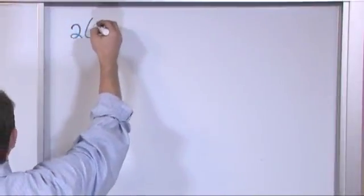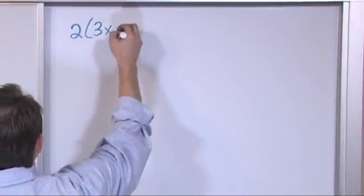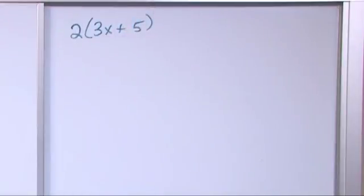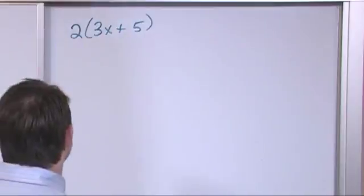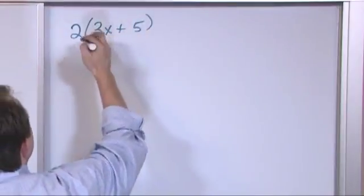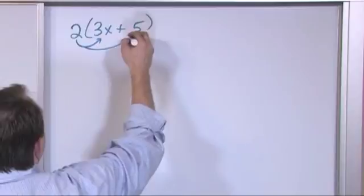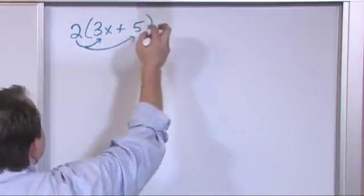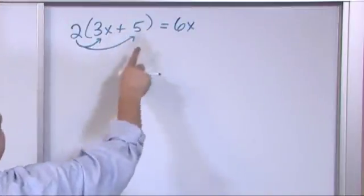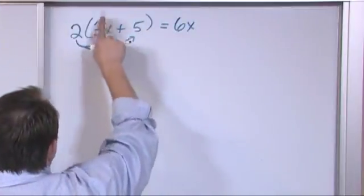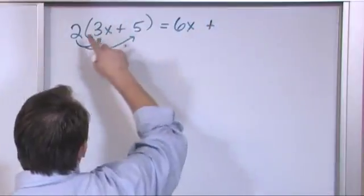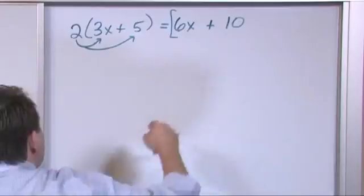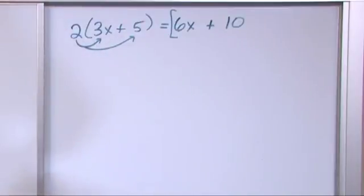What if you have 2 on the outside of the parenthesis — 2 times (3x plus 5)? It doesn't matter what number is on the outside; you distribute it into each term. Two times three is six, so 6x. Plus two times five is ten. You might be tempted to add these together but you can't because they're not like terms. So the answer is 6x plus 10.